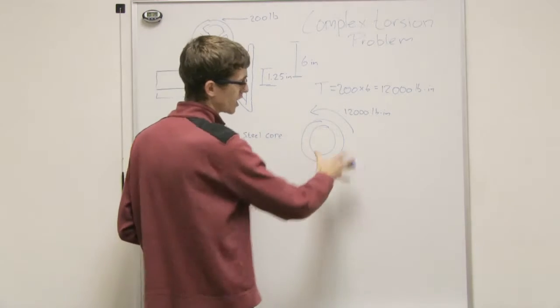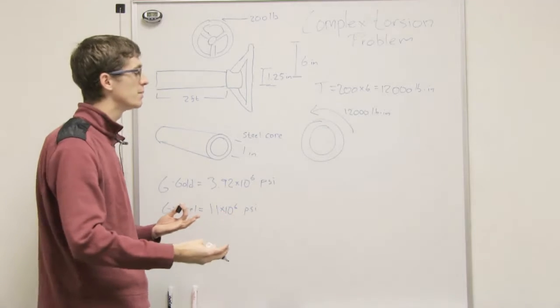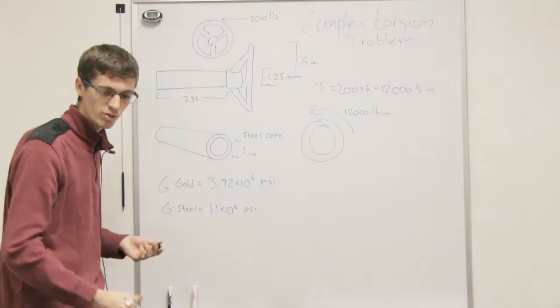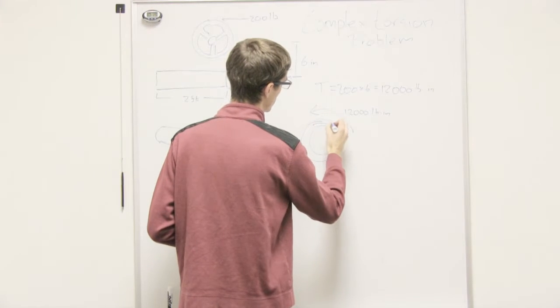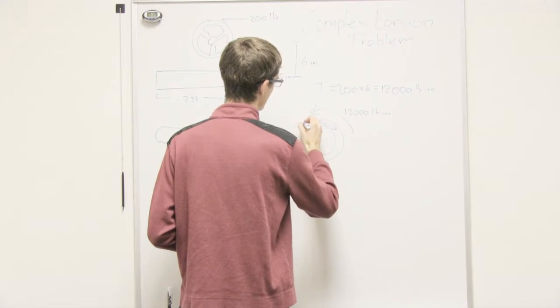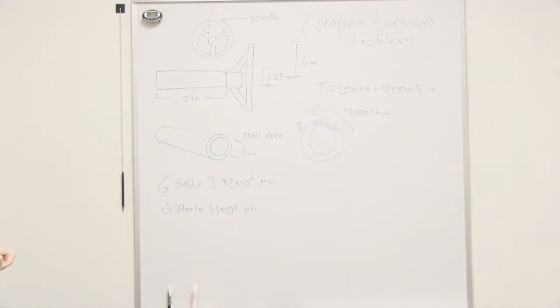You're going to have torque coming from the pipe, we'll call it a pipe, the exterior, the plating, the gold plating will have a torque, so we're going to call that torque T of G, the torque from the gold.